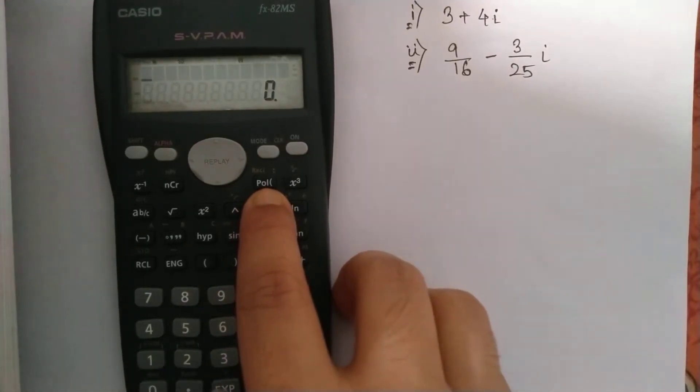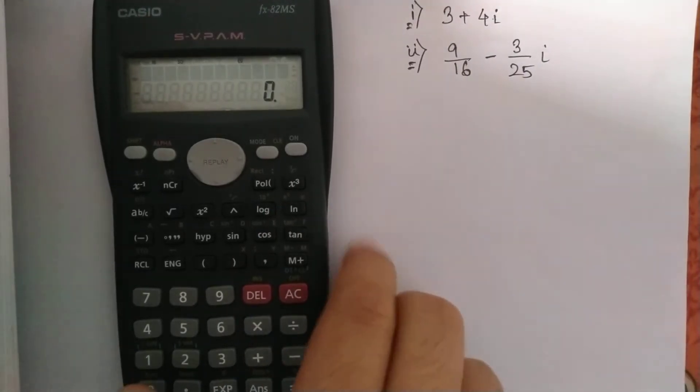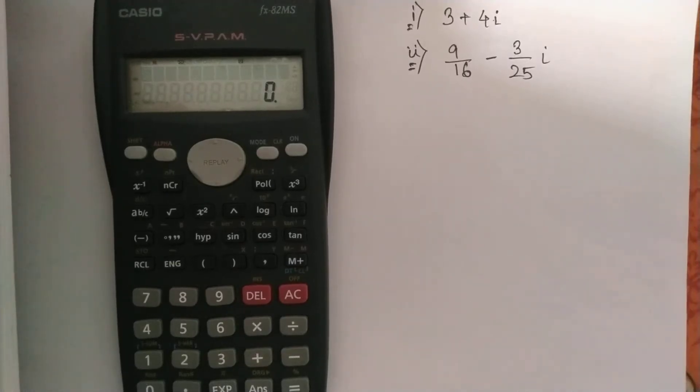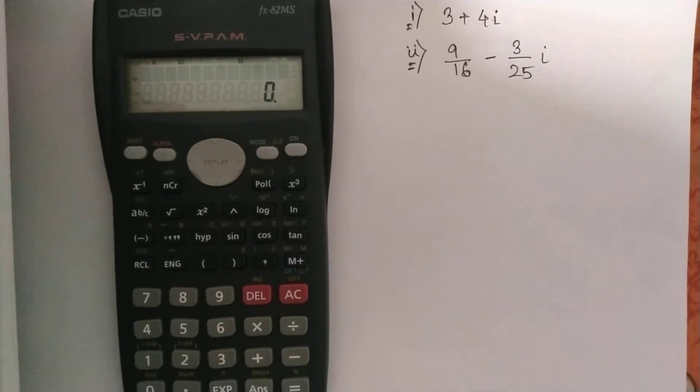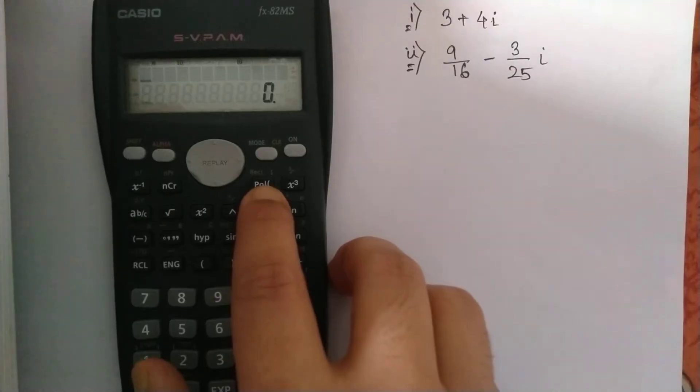Here you can find a function written as 'pol(' with an opening bracket. This is actually the polar form. Whenever you want to find the modulus of a complex number, first you need to press this pole button. Then you need to enter the real part of the complex number.